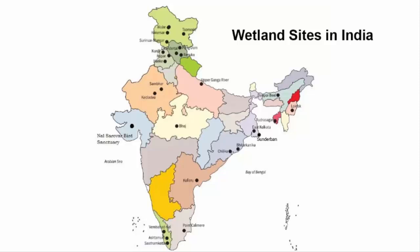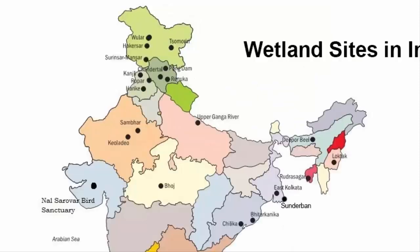Now let's look at the Ramsar sites or wetlands in India, going state-wise on a map. In Jammu and Kashmir, we have Hokera Wetland, Surinsar Mansar Lakes, Tsomoriri, and Wular Lake. In Himachal Pradesh: Chandratal Wetland, Pong Dam Lake, and Renuka Wetland — which is also the smallest wetland of India. In Punjab, we have Harike Lake, a man-made lake formed by constructing the headworks across the Sutlej River in 1953, along with Kanjali Wetland and Ropar Wetland.